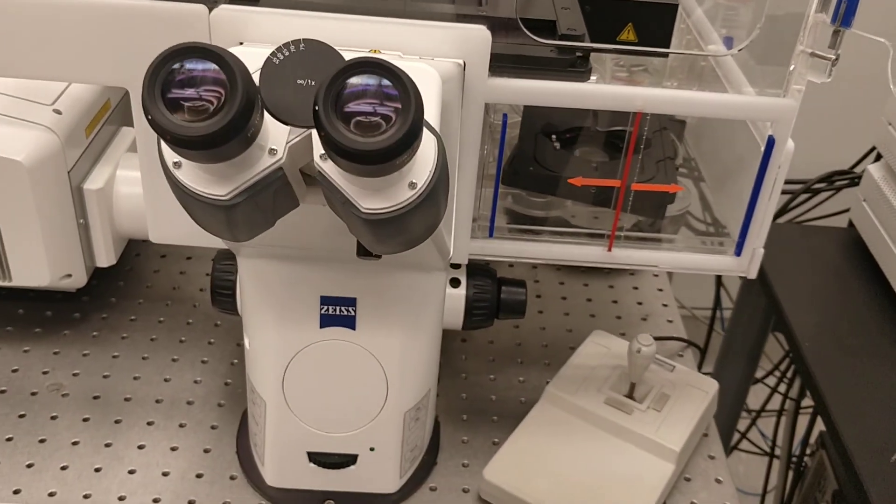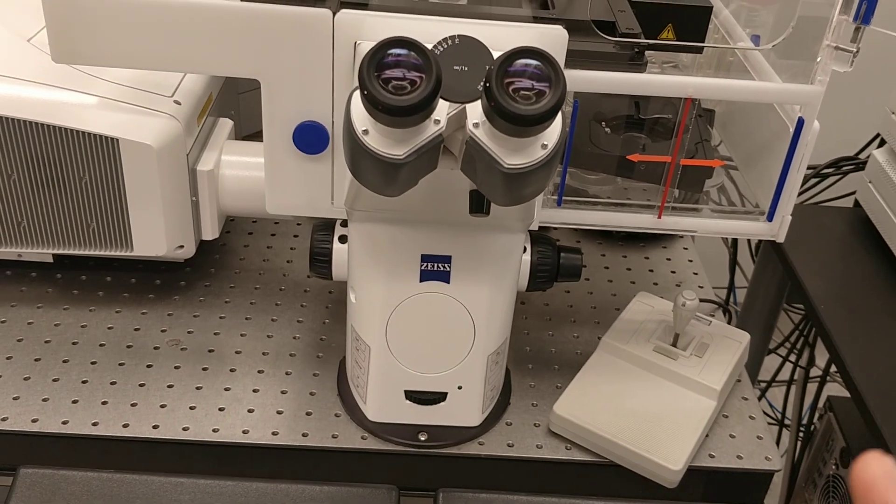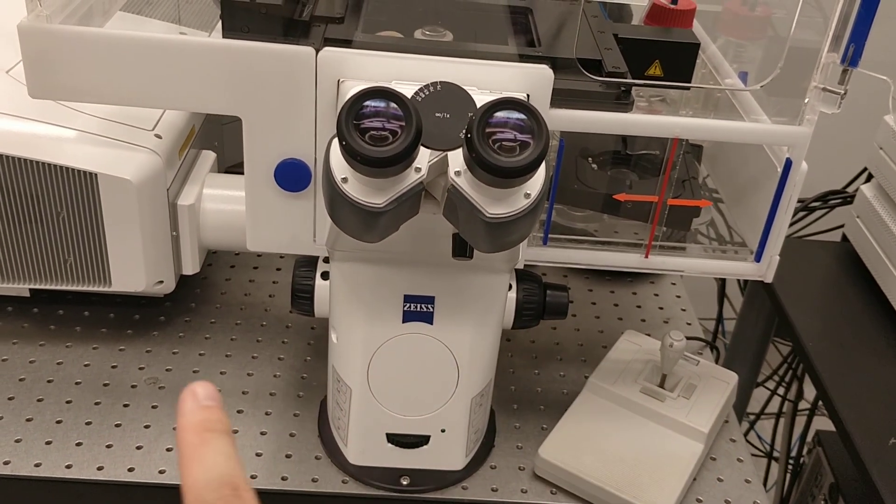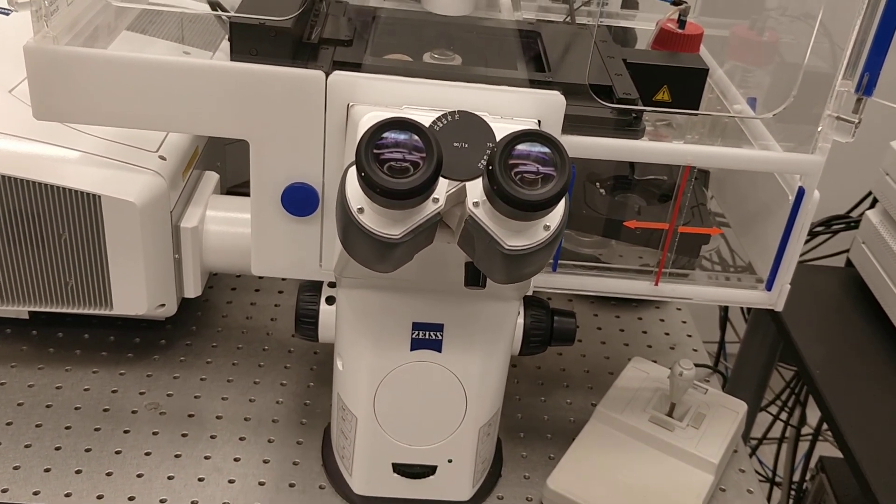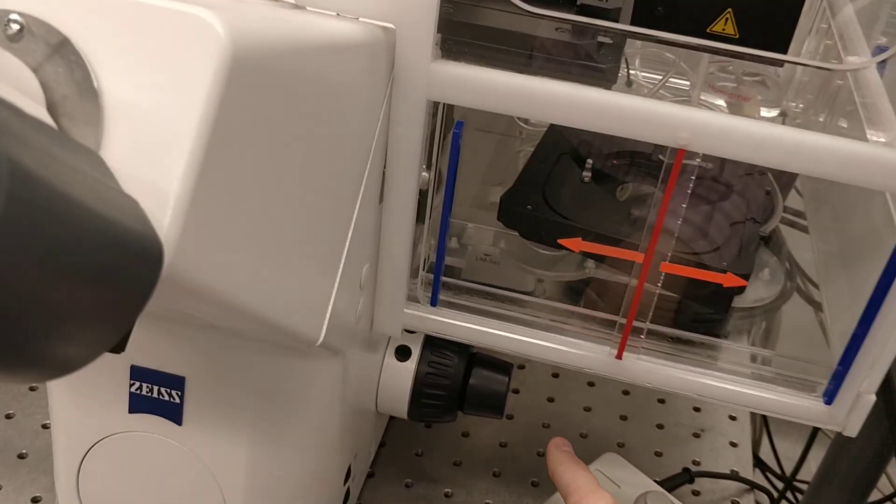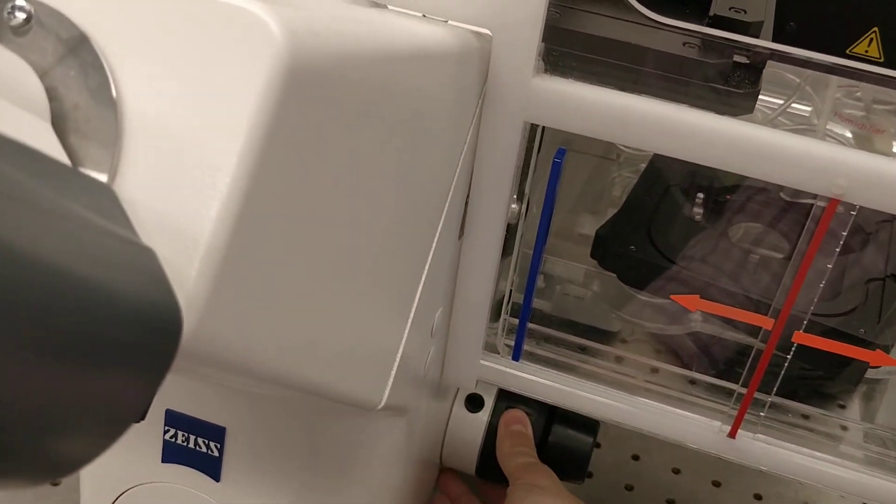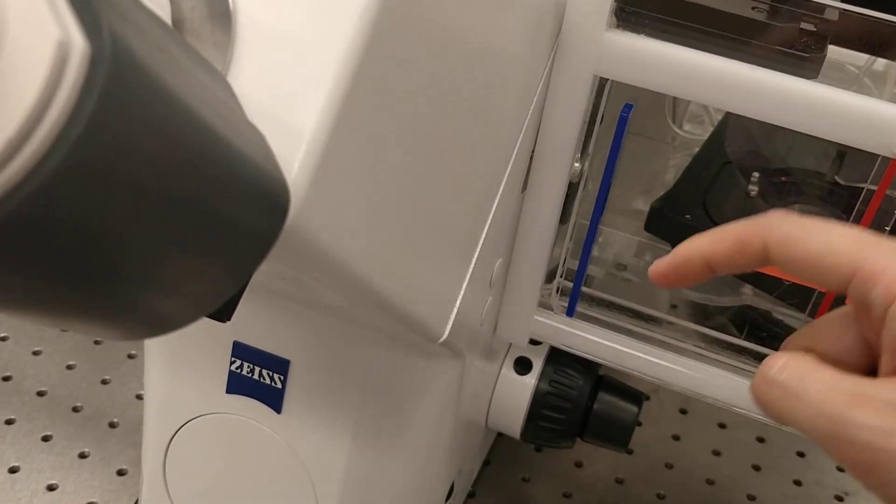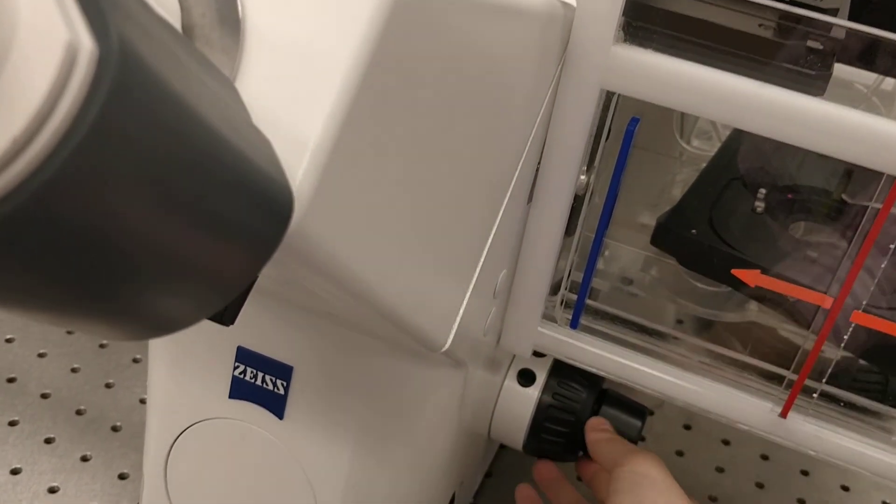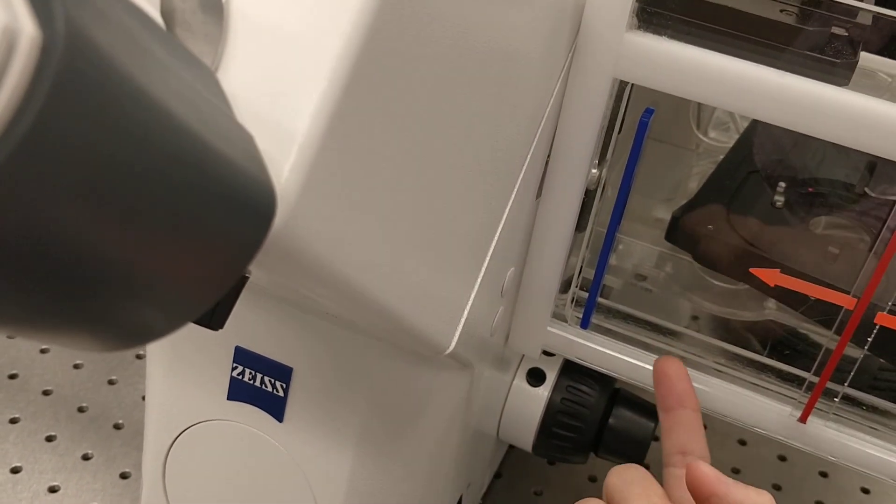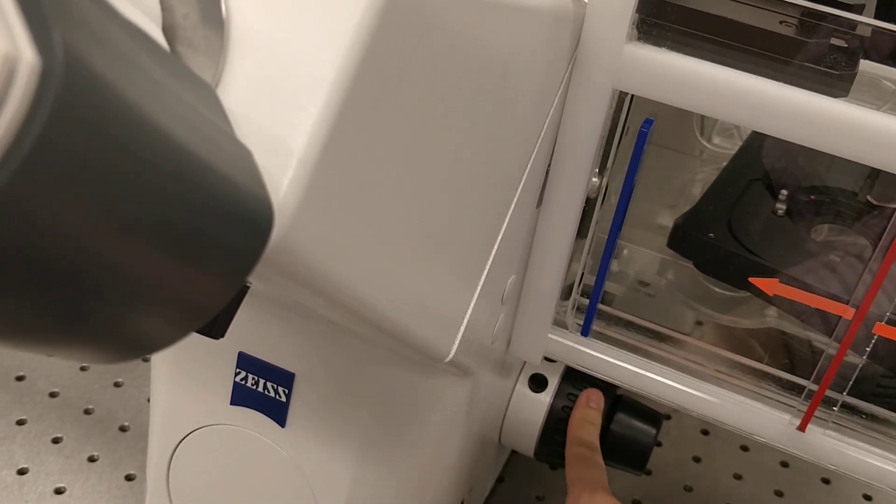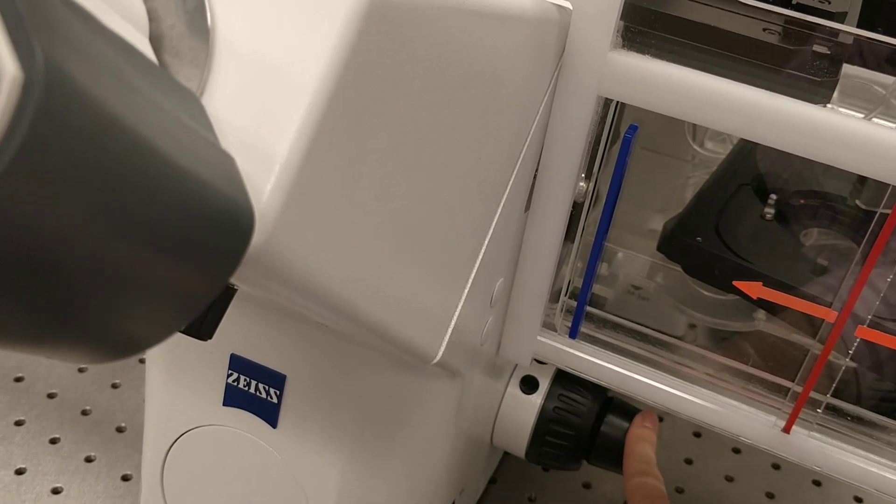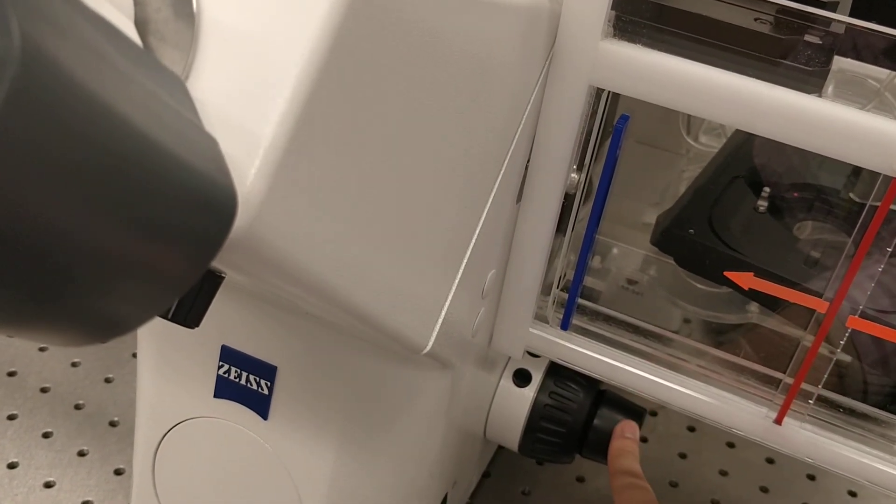So under here, this is a very standard microscope. You can see on both sides you have the focus. So the outside here, this is coarse focus. So towards you is to lower the objective and away from you is to increase objective. This is a coarse focus, so you move faster. And this is a fine focus, so it moves slower.